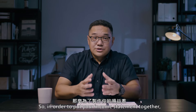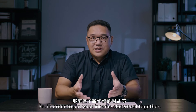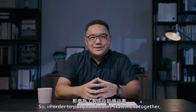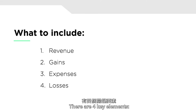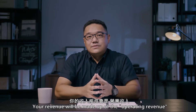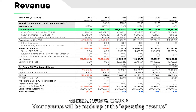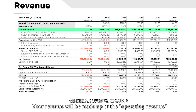So, in order to put your income statement together, what do you need to include? There are four key elements: revenues, gains, expenses, and losses.